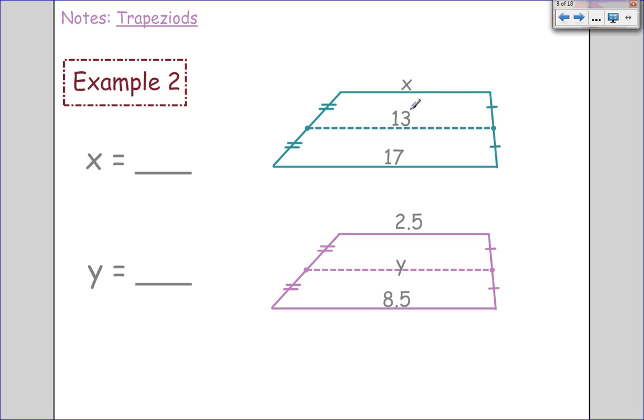Let's try some examples. We have our two bases, and this time it gives me my mid-segment. So the formula is x plus 17 over 2, because those are my bases, equals 13. Anytime you have a denominator, multiply it by the other side. So x plus 17 equals 26, and I'll get rid of the 2. Subtract 17, so x equals 9.